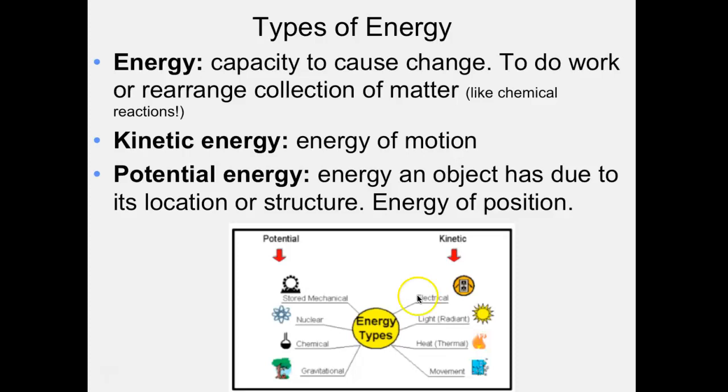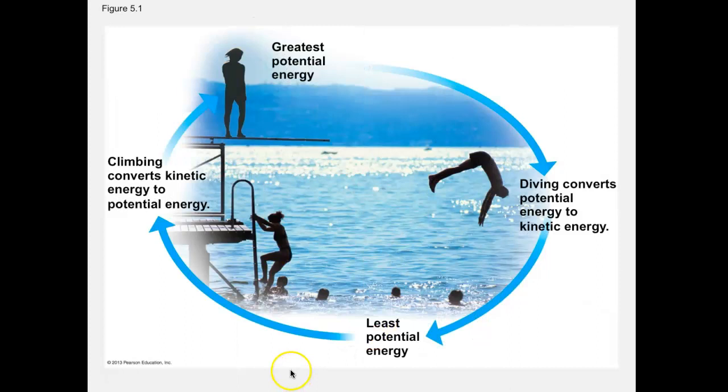In short, kinetic energy is the energy of motion. The opposite is potential energy — the energy an object has due to its location or structure; it's the energy of position. Looking at the different kinds of potential energy in the picture, there's mechanical energy, stored mechanical energy, nuclear energy, chemical energy, and gravitational energy.